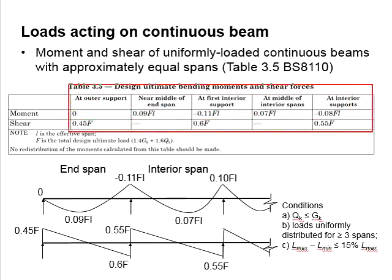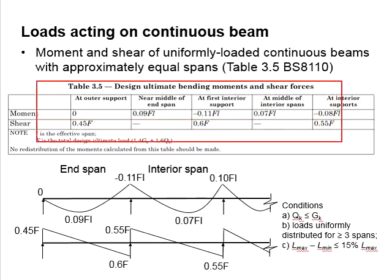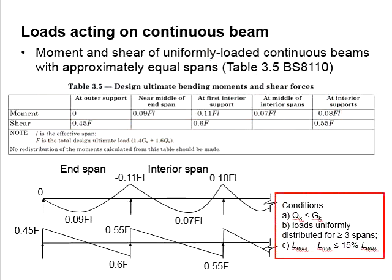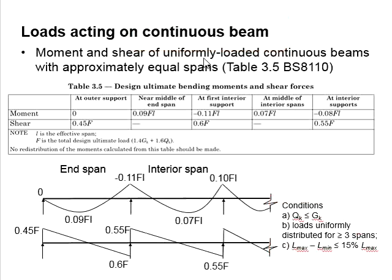This is also regardless of the number of spans throughout the continuous beam. However, bear in mind that this table is applicable under the conditions where the QK is less than GK. The loads are uniformly distributed for at least three continuous spans, and the maximum differences between the longest span and the shortest span should be within 15% of the longest span. If the continuous beam does not fulfill these requirements, theoretically, this table is not applicable.